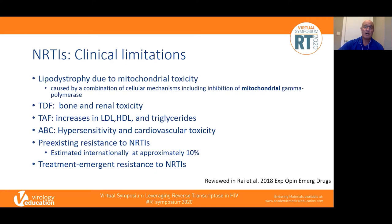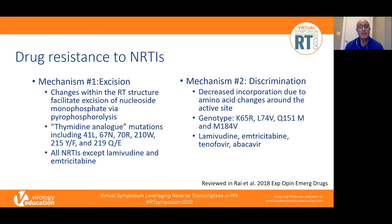There are two mechanisms by which resistance to NRTIs can occur. Mechanism number one is excision: mutations occur within RT that alter structure so that the incorporated chain-terminating NRTI monophosphate can be excised effectively. This is the mechanism for the so-called thymidine analog mutations — positions 41, 67, 70, etc. — and these affect all NRTIs with the exception of lamivudine and emtricitabine. The other mechanism is a discrimination issue where there's decreased incorporation due to amino acid changes around the active site — the point mutations at positions 65, 74, 151, and 184 — affecting lamivudine, emtricitabine, tenofovir, and abacavir.